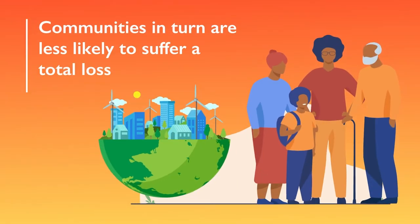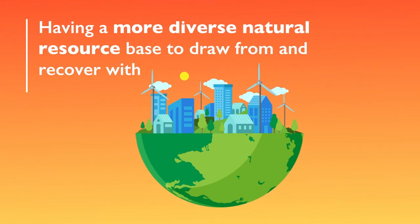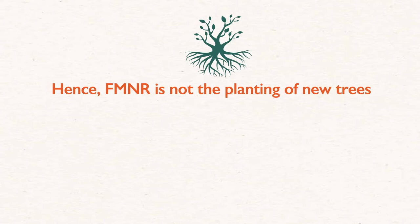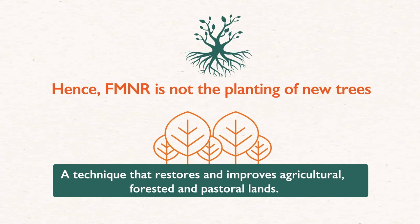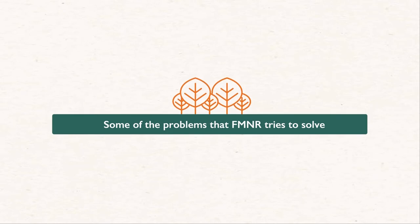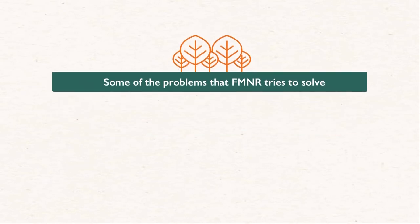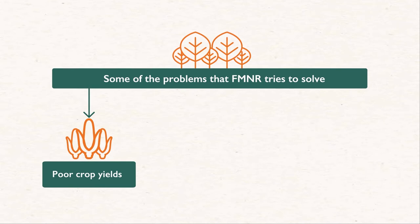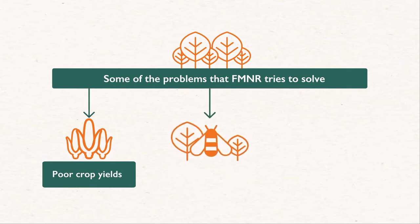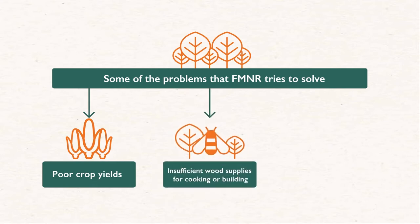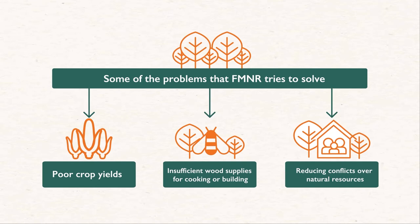Communities, in turn, are less likely to suffer a total loss, having a more diverse natural resource base to draw from and recover with. Hence, farmer-managed natural regeneration is not the planting of new trees, but a technique that restores and improves agricultural, forested, and pastoral lands. Some of the problems that farmer-managed natural regeneration tries to solve are poor crop yields due to poor soil fertility, erosion, drought, flood, or wind damage, insufficient wood supplies for cooking or building, and reducing conflict over natural resources.